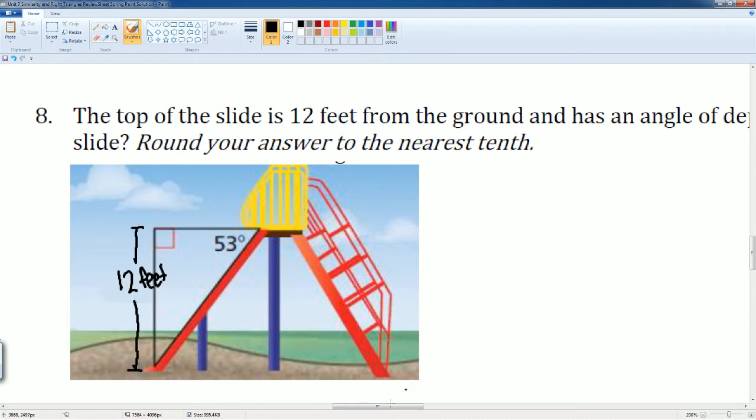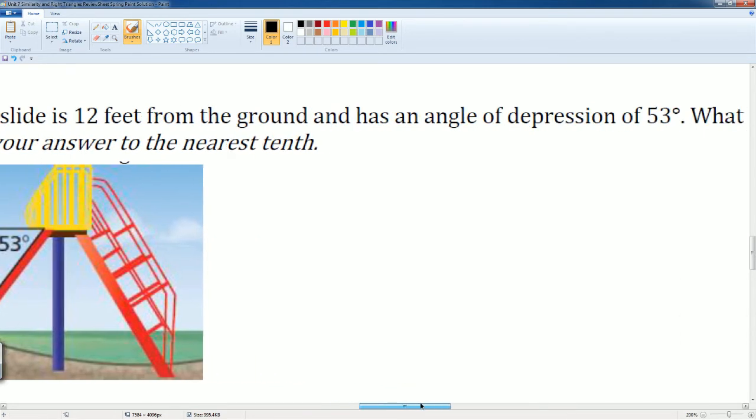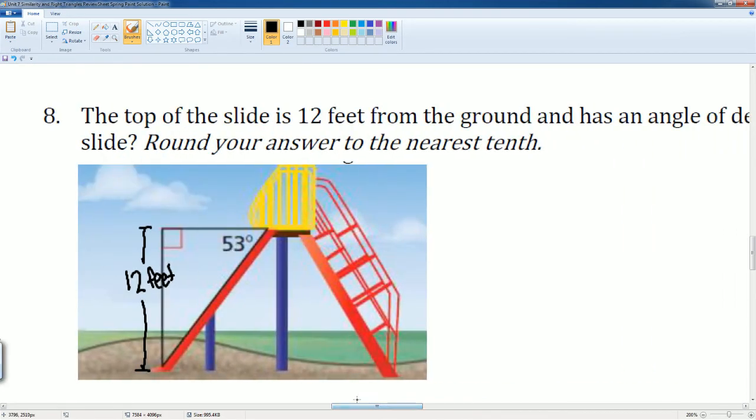Then it asks us for the length of the slide. So this whole thing here is the length of the slide. I don't know what it is, but I can make that the value X. All right, so from this angle, we draw our person and label our information: the 12 feet here is your opposite, and then the length of the slide...